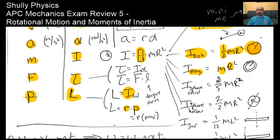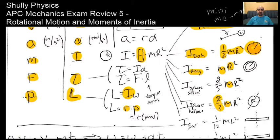Solid spheres have a moment of inertia of two-fifths MR squared, and a hollow sphere is two-thirds MR squared. You can see how the solid one has a lesser moment of inertia than the hollow sphere if they have the same mass and radius. If you push all that mass out toward the outside of the sphere, it has a greater moment of inertia—but still not as much as if all the mass were located at a set radius away.